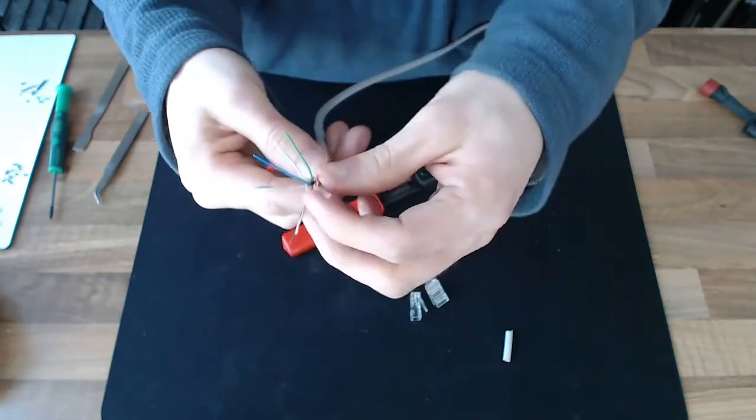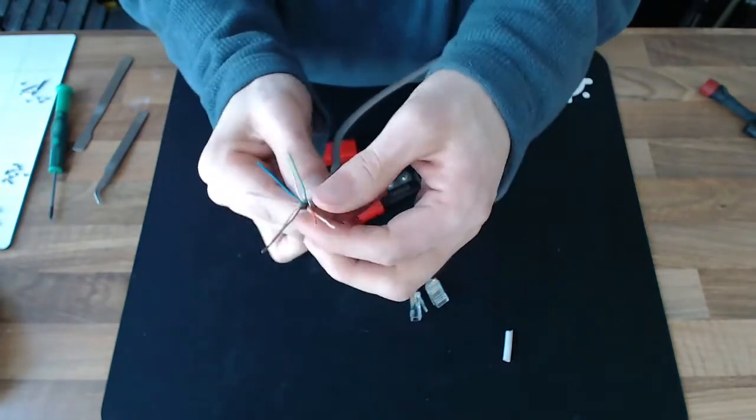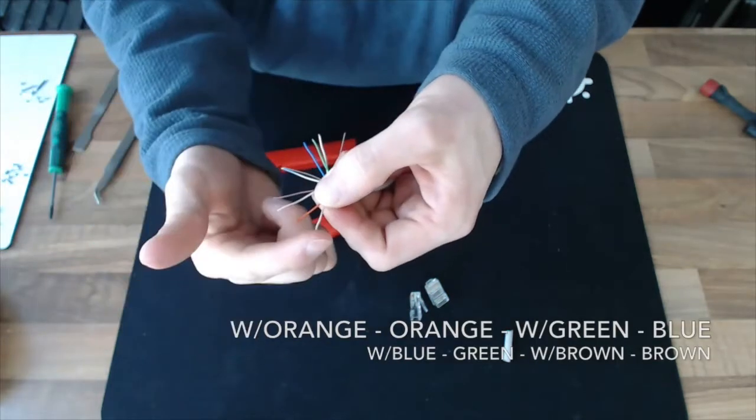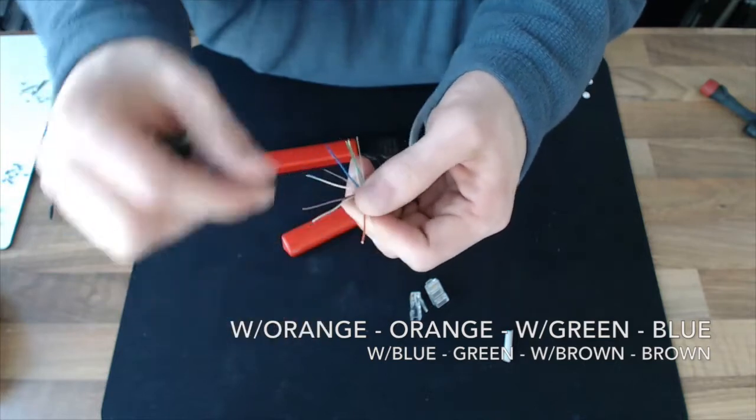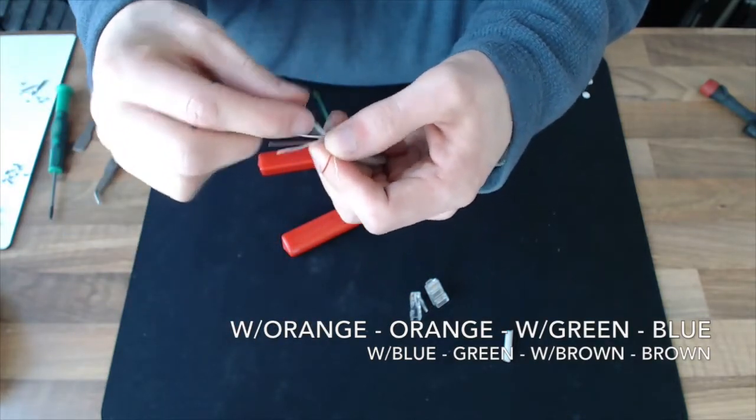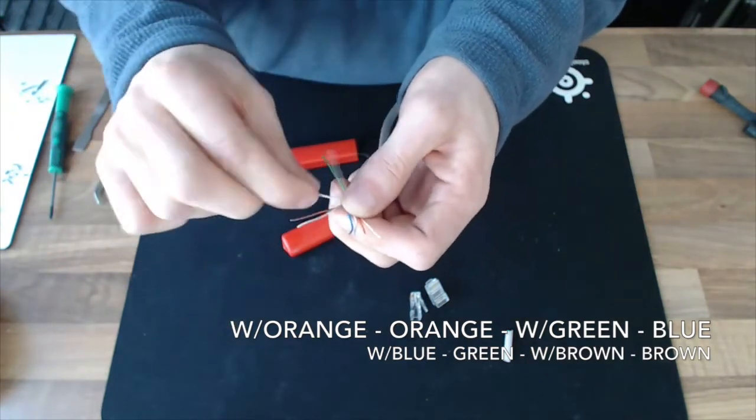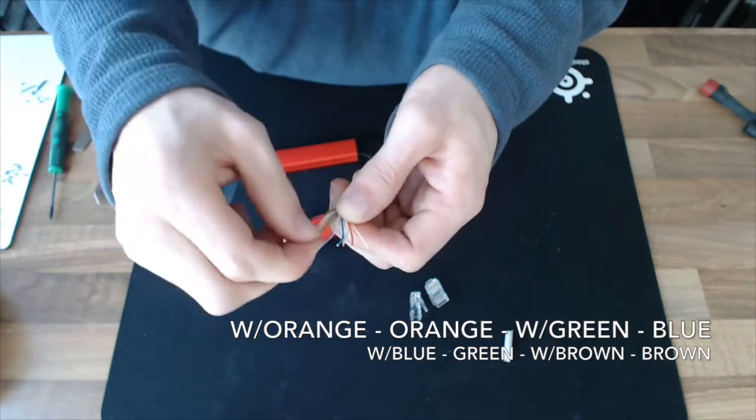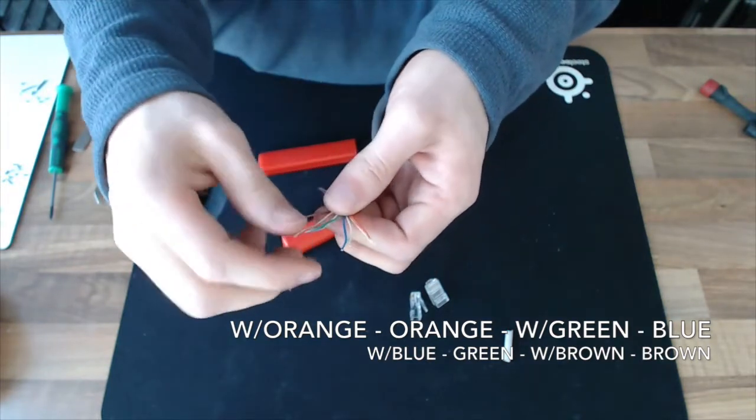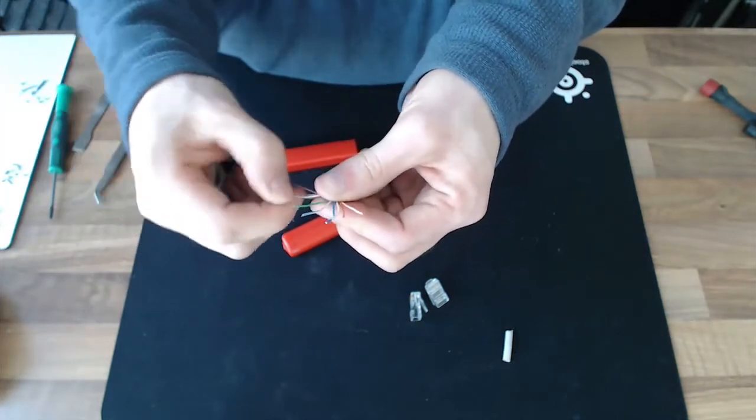Now, there are a couple of standards for Ethernet wiring. The most common one, which is what I use, is the B standard. And that goes a little something like this. It goes white, orange, orange, white, green, blue, then white, blue, green. I'm just going to keep moving that bit of string out of the way. And then white, brown, brown. Let me just gather those together.